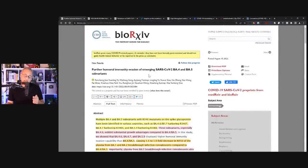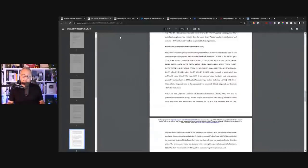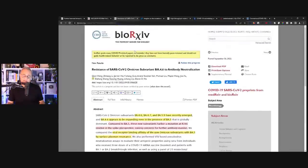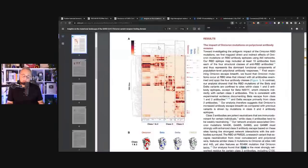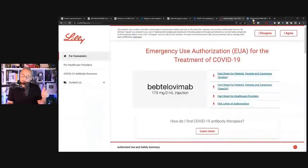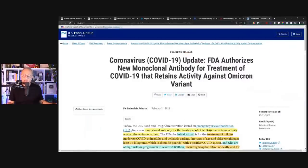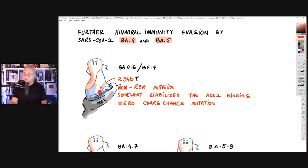This is the preprint that we're going to talk about. They say further humoral immunity evasion of emerging SARS-CoV-2 BA.4 and BA.5 subvariants, not the BA.4 and 5 itself. They are actually comparing these subvariants to BA.4 and 5. This is their PDF. This is another study, resistance of SARS-CoV-2 Omicron subvariants BA.4.6 to antibody neutralization. Another study that shows there is a problem with the neutralization. Then some more references for your weekend reading pleasure.